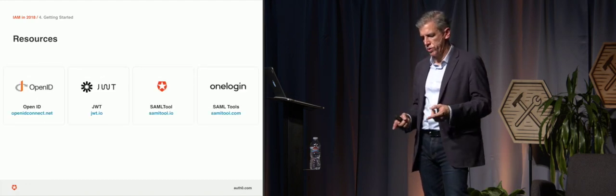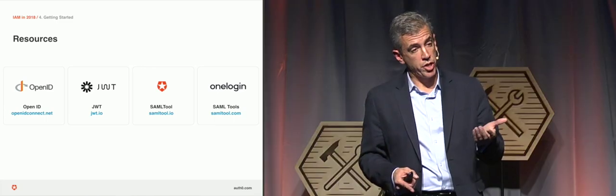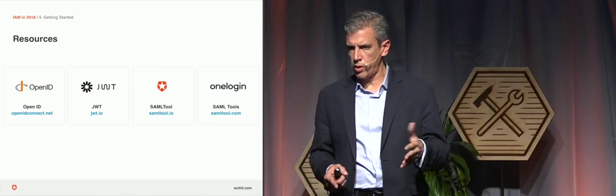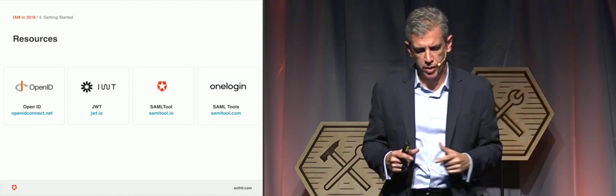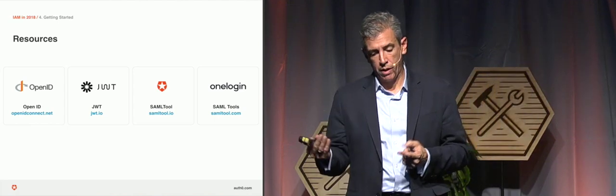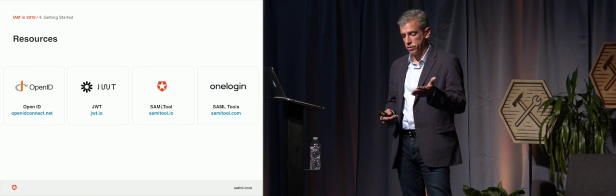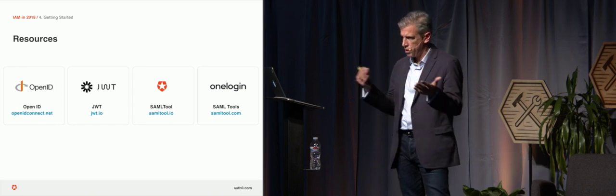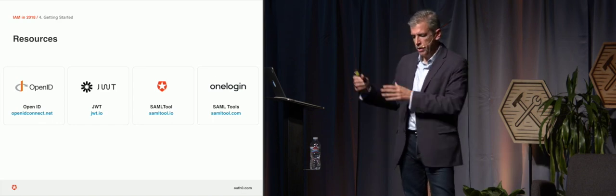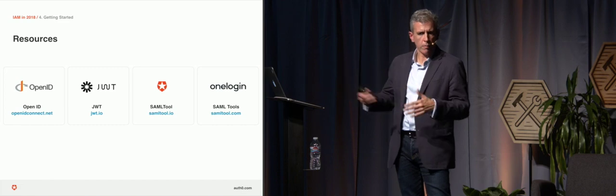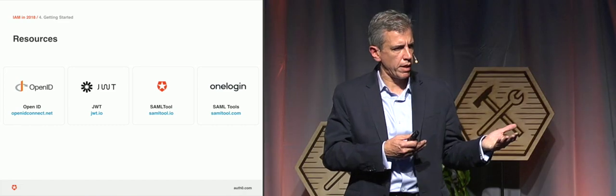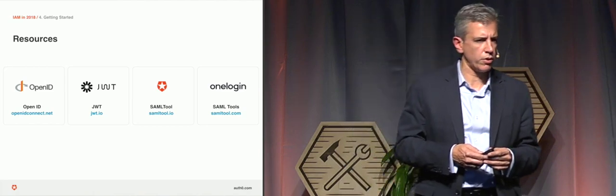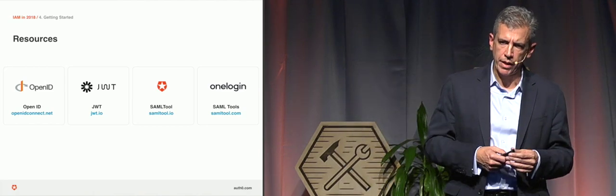Some links and resources to get you started. JWT stands for JSON Web Tokens — that's the modern SAML for the actual token. There are two tools: one is ours, SAMLtool.io, which helps with SAML debugging. OneLogin, another company in this space, has really nice tools — in some respects better than ours — so I included it because I thought it would be insightful and useful for all of you. Thank you very much.